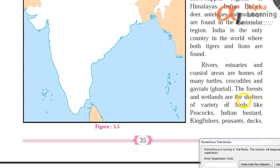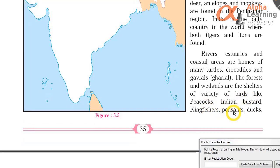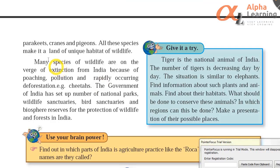The forests and wetlands are the shelters of a variety of birds like peacocks, Indian bustard (Rajasthan's state bird), kingfishers, pheasants, ducks, parakeets (green parrots are called parakeets), macaws, cranes and pigeons. All these species make India a land of unique wildlife habitat.